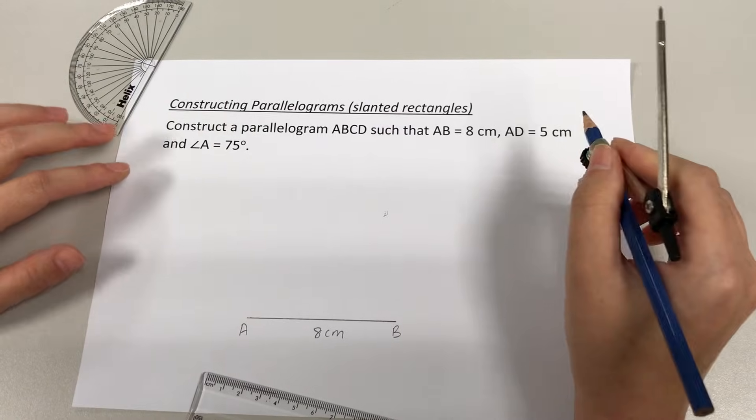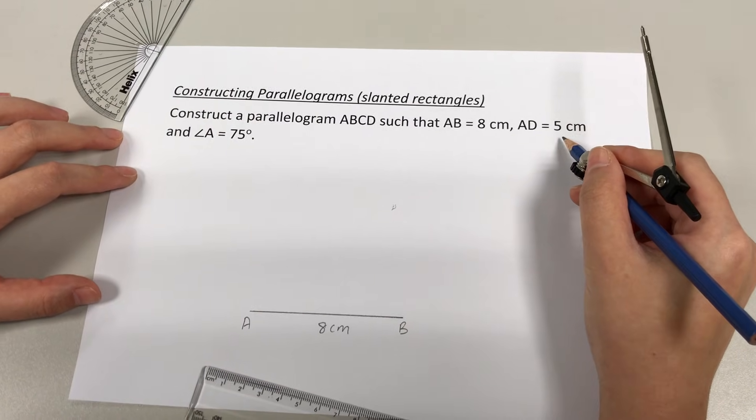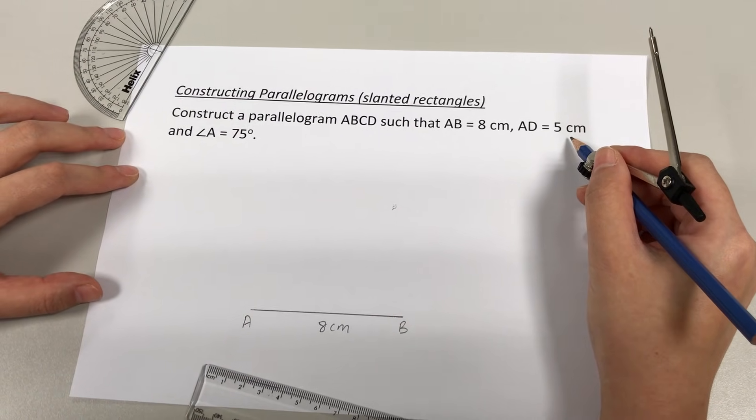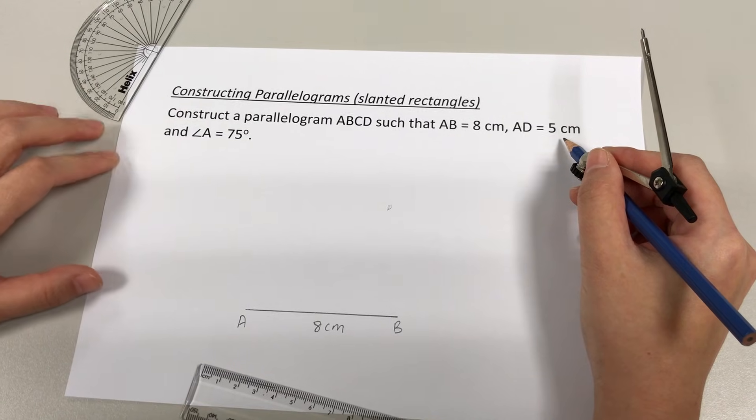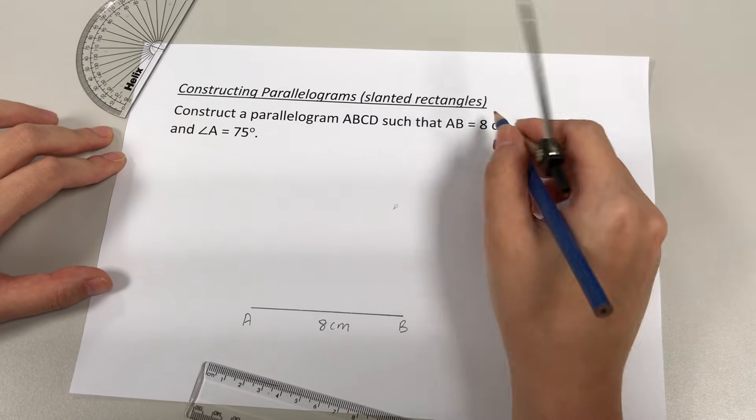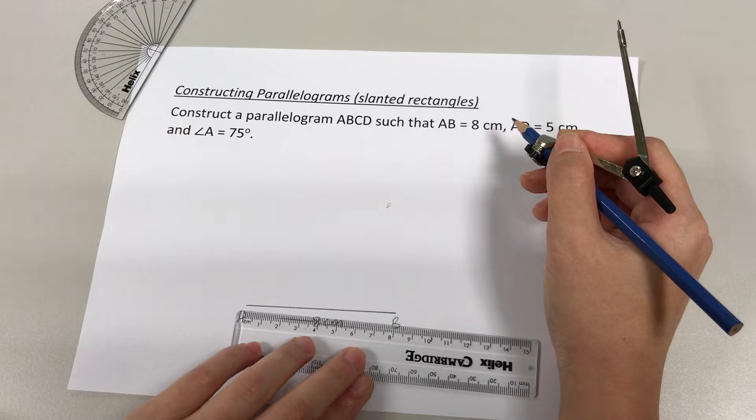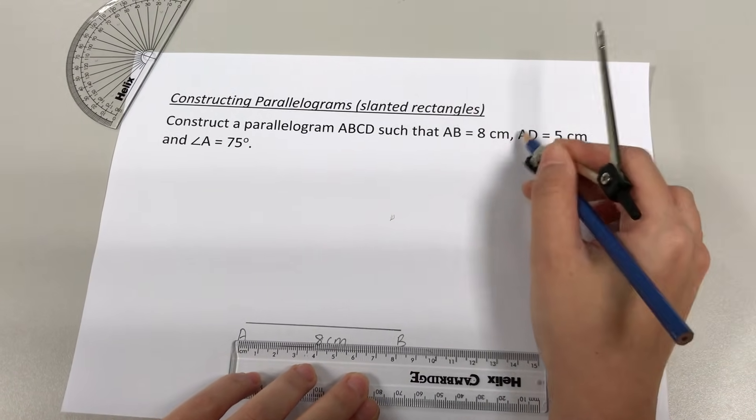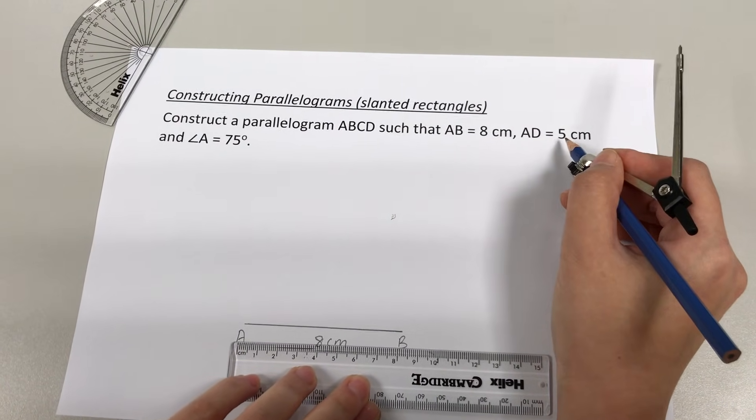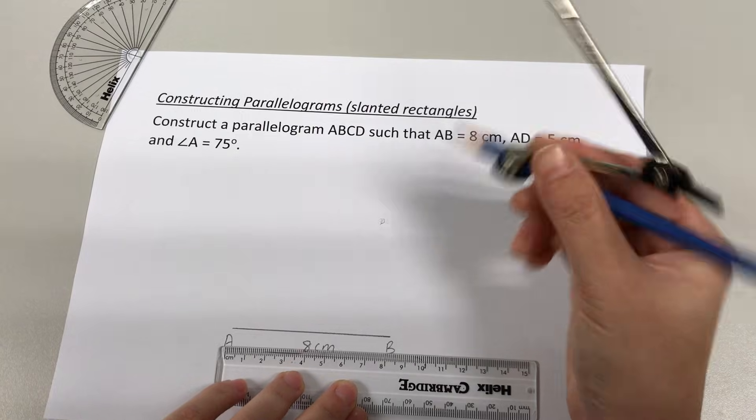Next, let's look at the next information we have, which is AD equals 5 cm. Just like what you did in triangles, you only draw the first length using a ruler to measure the length of the line. All other lengths given after the first one has to be drawn using a compass.